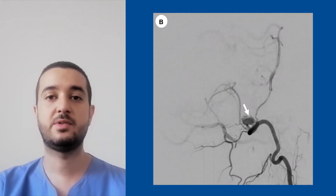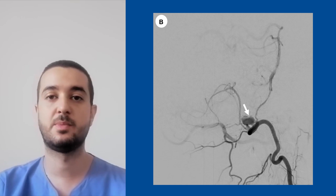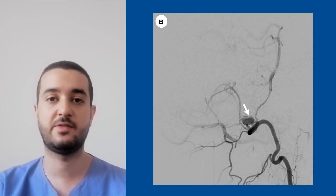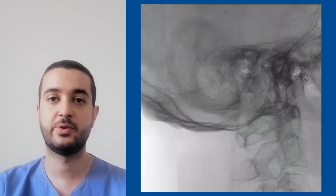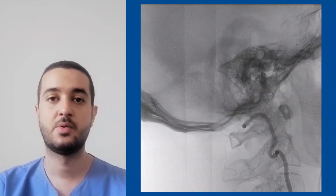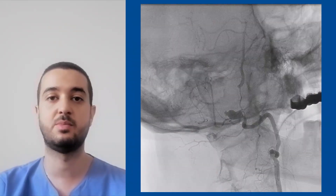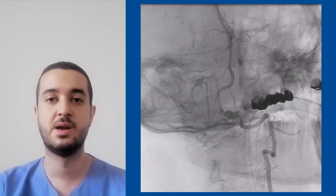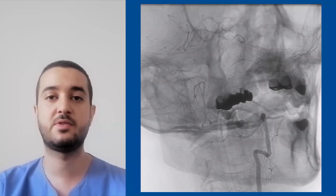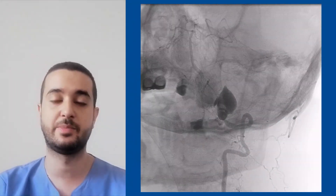Initial percutaneous left vertebral artery angiography confirmed an irregular circular aneurysm along the proximal aspect of the left PICA. Unfortunately, during 3D rotational angiography, we noticed a massive contrast agent extravasation after bolus injection originating from the aneurysmal dome, indicative of aneurysm rupture.